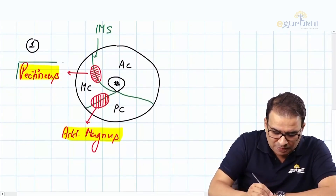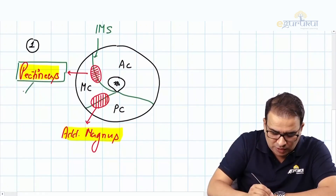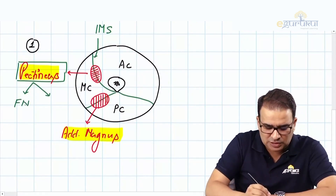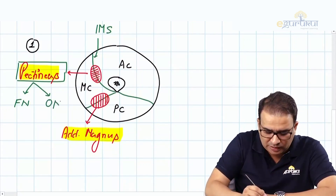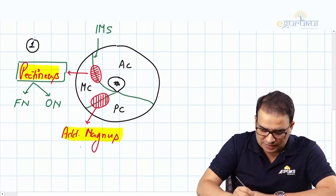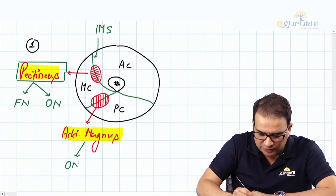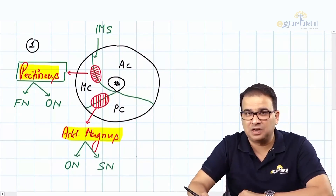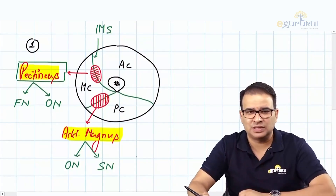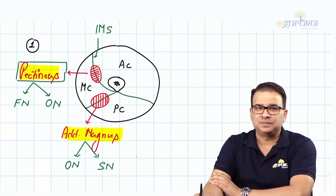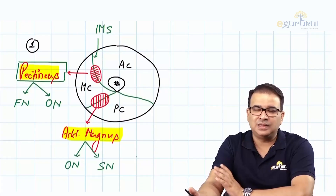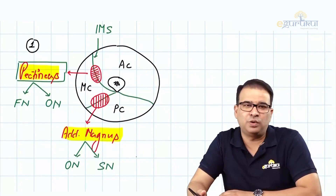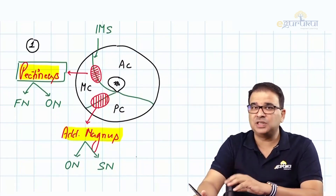The pectineus muscle is supplied by two nerves: the femoral nerve — the nerve of the anterior compartment — and the obturator nerve — the nerve of the medial compartment. Similarly, adductor magnus is supplied by the obturator nerve from the medial compartment, and also by the sciatic nerve — more precisely the tibial component of the sciatic nerve — from the posterior compartment. These are the hybrid muscles of the thigh.